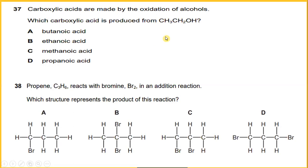Carboxylic acids are made by the oxidation of alcohol. Which carboxylic acid is produced from CH3CH2OH? The answer will be ethanoic acid.